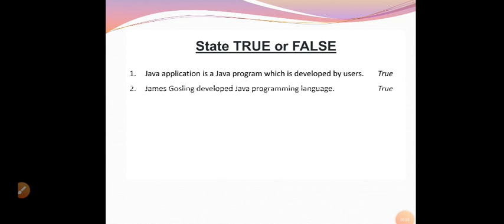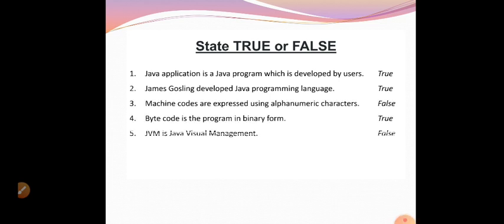In this chapter, first of all you have True/False questions. The first one: a Java application is a Java program which is developed by users — this is absolutely correct, it is true. The Java application is made by Java programmers. James Gosling developed Java programming language — this is also true. He started this work before 1991 and completed it in the year 1995, so he was the initiator.